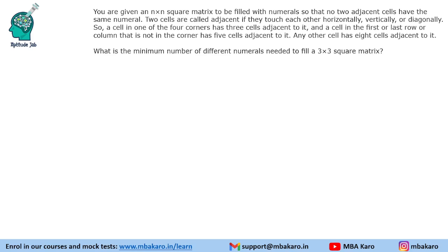Hello everyone, welcome to Aptitude Jab. This set from CAT 2018 Slot 1 DILR says that there is an n×n square matrix. It has to be filled with numerals so that no two adjacent cells have the same numeral. Two cells are called adjacent if they touch each other horizontally, vertically, or diagonally. A cell in one of the four corners has three adjacent cells, a cell in the first or last row or column not in the corner has five adjacent cells, and any other cell has eight adjacent cells.